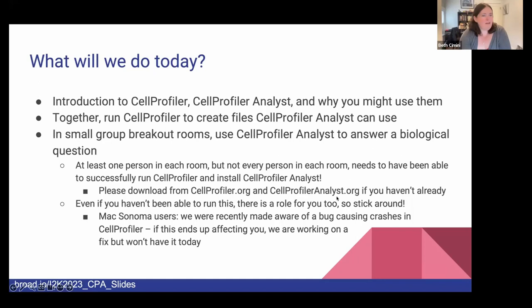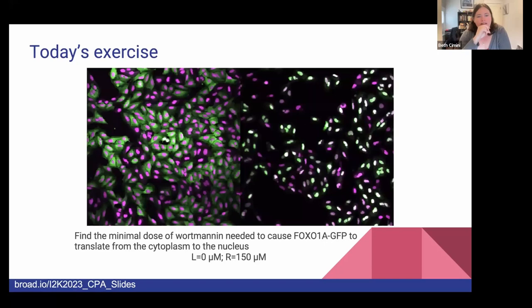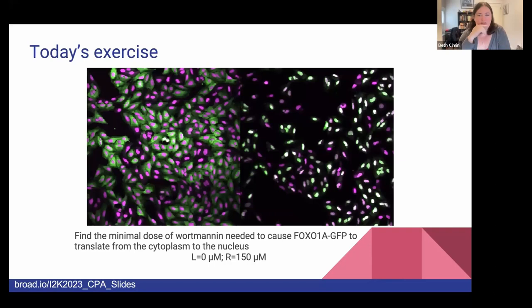The biological question we are going to be trying to solve today is a translocation question. This is real data from a real experiment where wortmannin is being used to cause translocation of a transcription factor called FOXO1A, which has been GFP tagged, to try and figure out what dose causes translocation into the nucleus. On the left you have the negative control with no wortmannin and no translocation; on the right a really high dose, and we'll be calculating the IC50 and looking at a dose response curve.